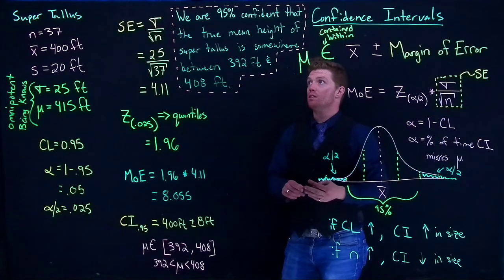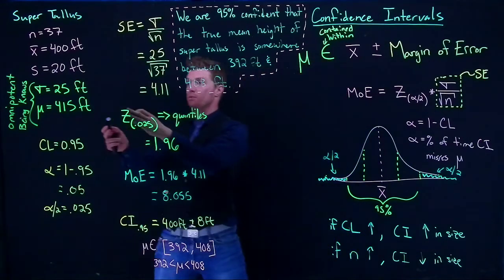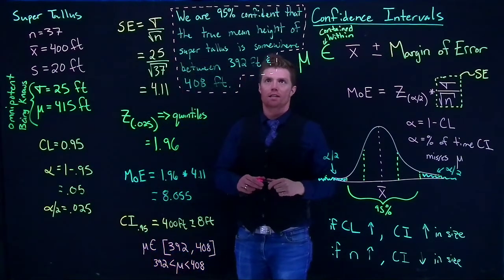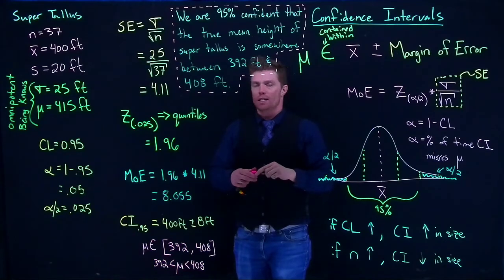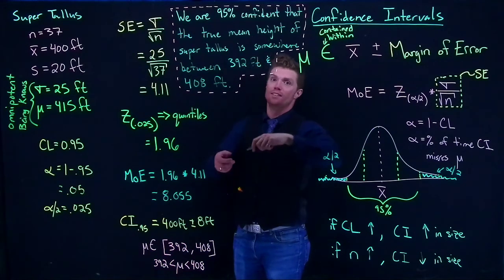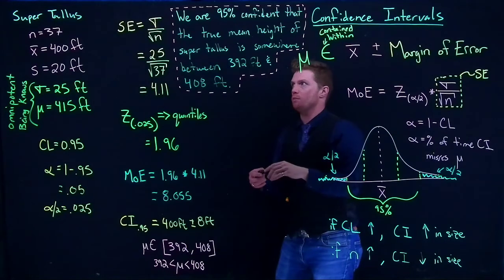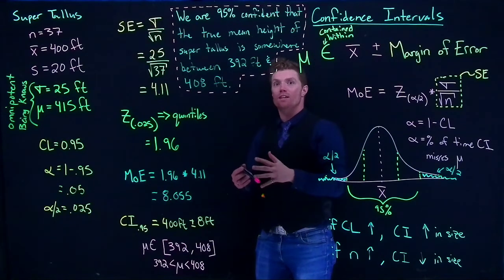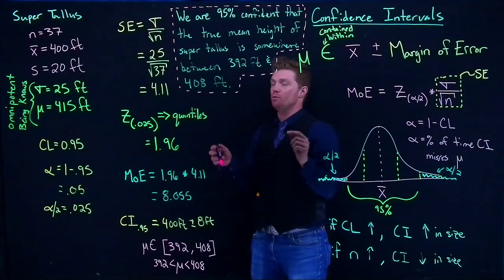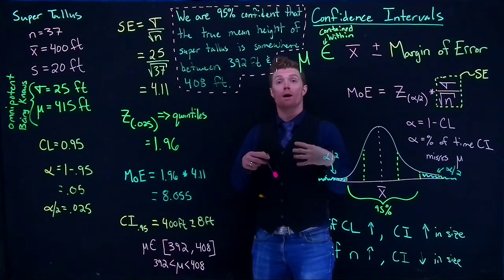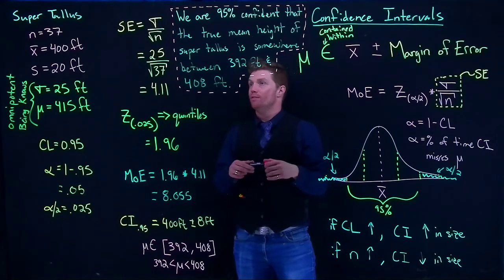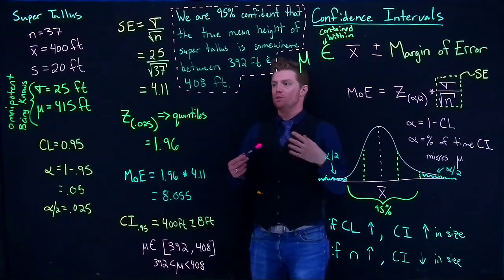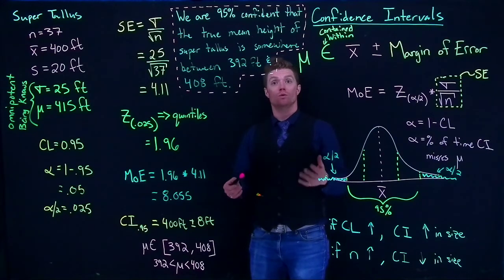Now, if you notice that our confidence interval actually didn't capture the true mean height. And you're like, well what, did I just fail? It's like no. We knew that it was going to do this occasionally. Now it shouldn't happen most of the time. Like if we were to do this, the same experiment 100 times. Like we took samples of 37 trees over and over and over again. 95% of the time they're actually going to capture the true population mean. And 5% of the time we're going to miss it. And it's not that we did anything wrong. It's just that's what happens when we have random data sometimes. And how we use our confidence intervals.